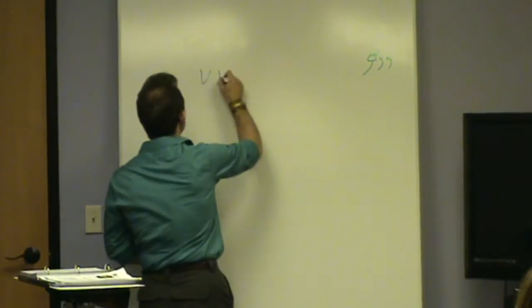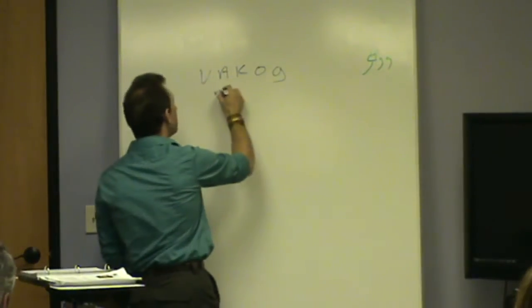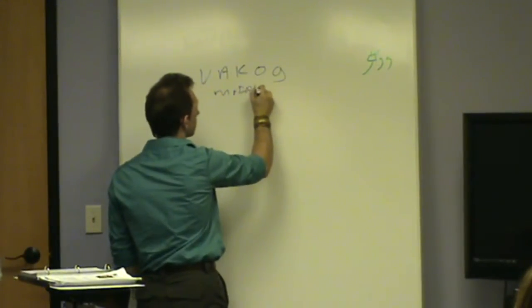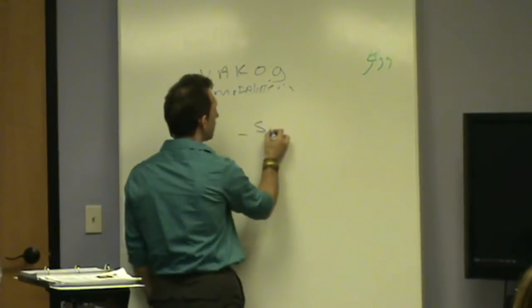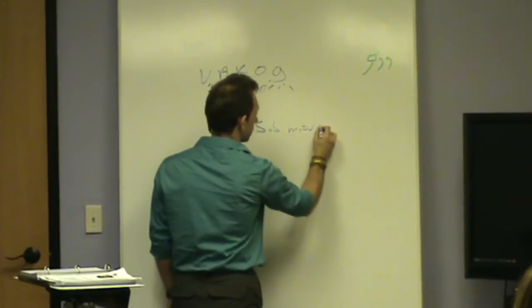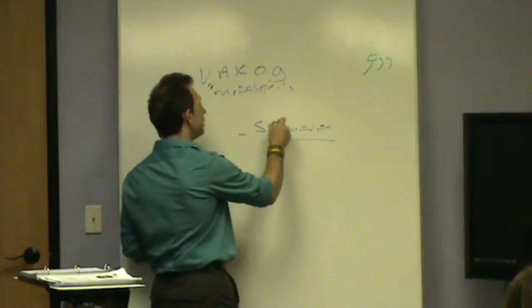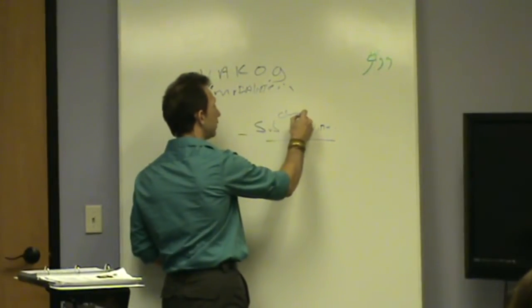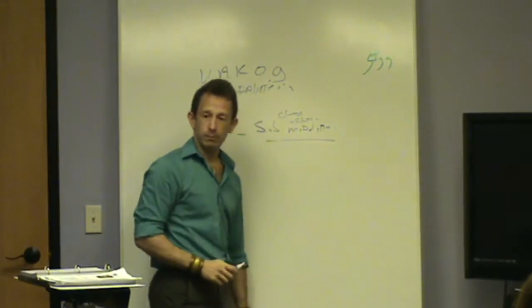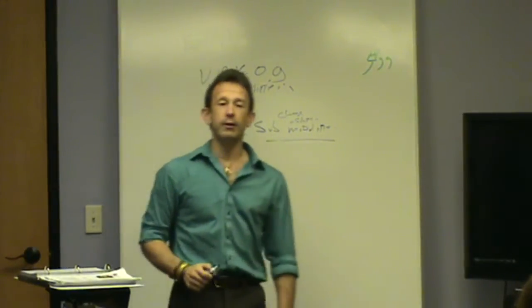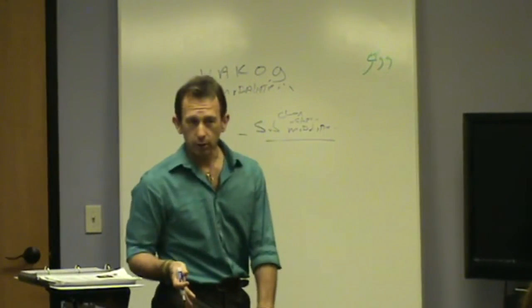Now within those visual, auditory, kinesthetic, olfactory, and gustatory modalities, as NLP likes to put it, you have sub-modalities. These sub-modalities are actually what change the subjective experience. They're the coding system by which we make finer and finer distinctions in our thoughts. They're the structure of our thoughts.